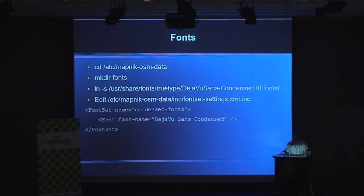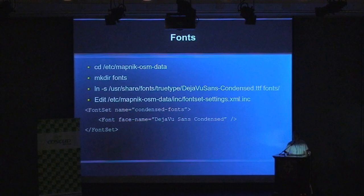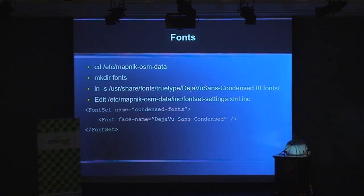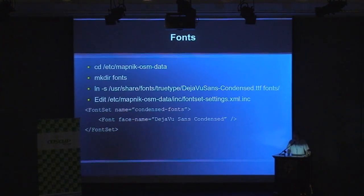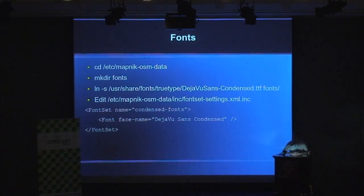For fonts, we need to make a new directory, because by default MapNik only searches in the /etc/mapnik-osm-data directory. So we create a new subdirectory and link the fonts from our main system into this directory, using only those fonts which we actually need for our maps.